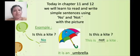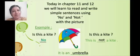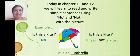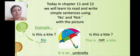Then what is it, children? It is an umbrella. Where do we use an umbrella, children? In rainy season, we use an umbrella. A colorful umbrella. Now I will give you some more examples.